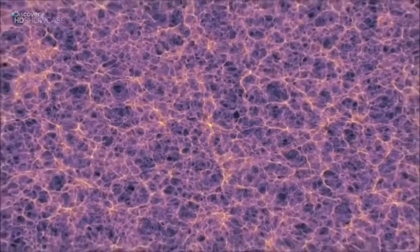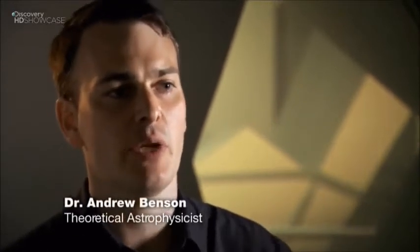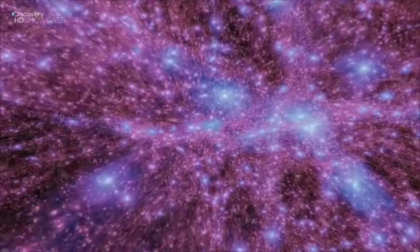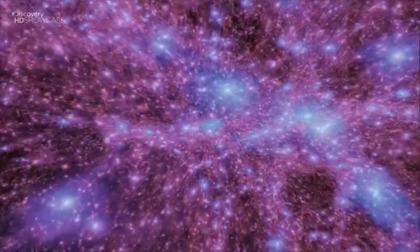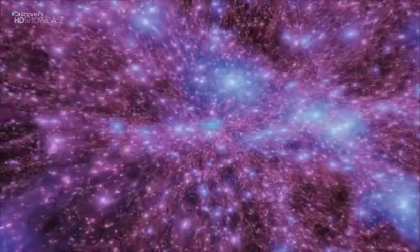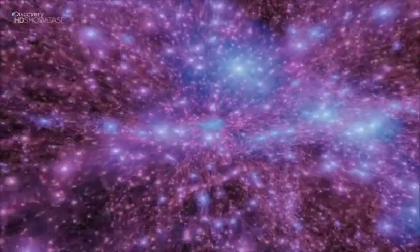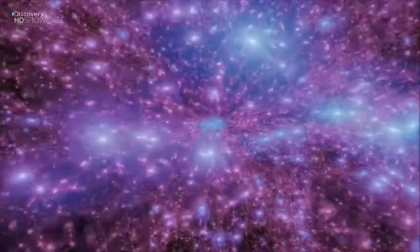Dark matter affects where in the universe galaxies will form. When we look at galaxies, they're not sprinkled around at random. They actually tend to form in little groups, and that's really reflecting the large-scale distribution of dark matter. Dark matter holds together the whole superstructure of the universe.